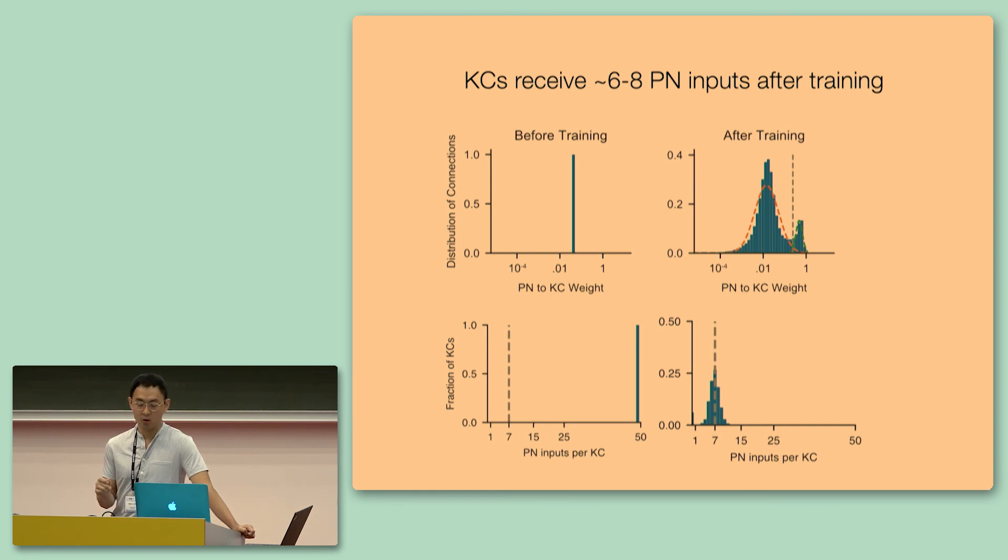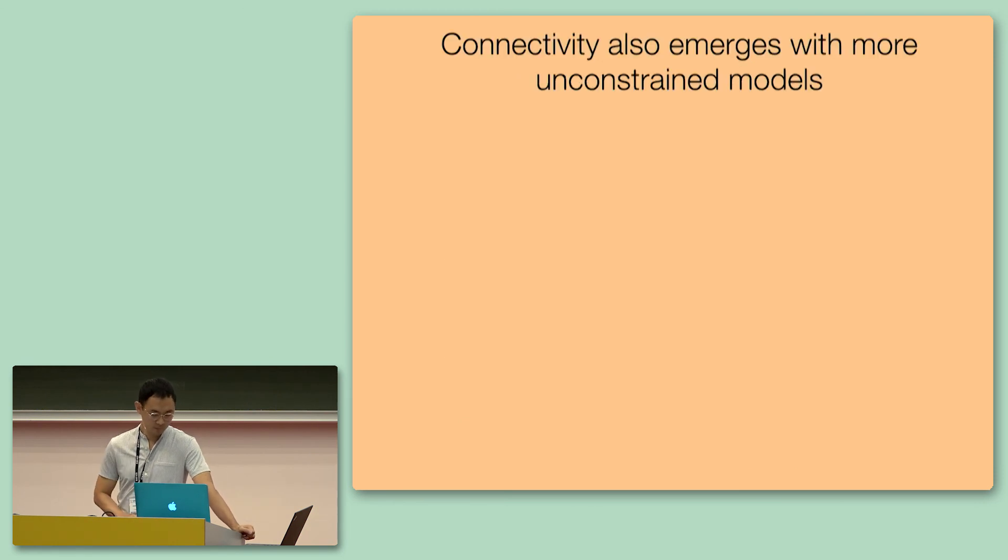I should say now that the only constraint that we have imposed onto this network is non-negativity. The connections from all different layers must be positive, and that's it. So currently, the network model I've imposed has a fair bit of constraints. We've constrained the number of neurons per layer, and also the number of layers as well. What if we relax these factors? Will a different but also optimal solution evolve to accommodate olfactory learning?